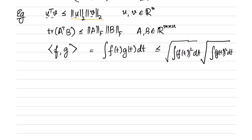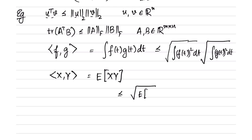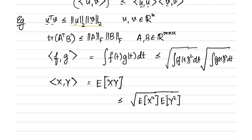Similarly, for random variables: if x and y are two scalar random variables, the inner product can be defined as the expectation of x times y. The corresponding Cauchy-Schwarz inequality becomes: the expectation of x·y is less than or equal to the square root of the expected value of x squared, times the square root of the expected value of y squared. We have now seen four examples of Cauchy-Schwarz inequality — for vectors, matrices, functions, and random variables — all useful, with the function case being particularly relevant in this course. This demonstrates how results developed for vectors and matrices can be extended to other domains.